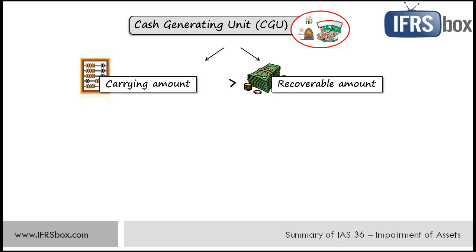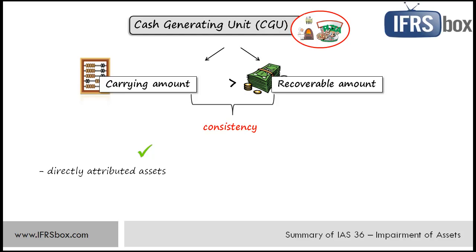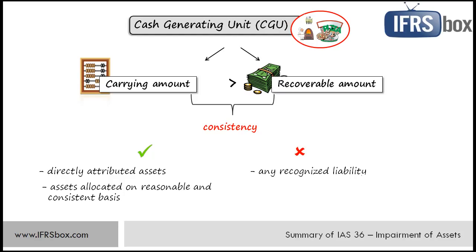The carrying amount of a CGU shall be determined on a basis consistent with the way the recoverable amount is determined. In the carrying amount of the CGU we shall include carrying amounts only of those assets that can be directly attributed to the unit, as well as assets allocated on a reasonable and consistent basis. On the other hand, a CGU shall not include any recognized liability unless the recoverable amount of the CGU cannot be determined without consideration of that liability.